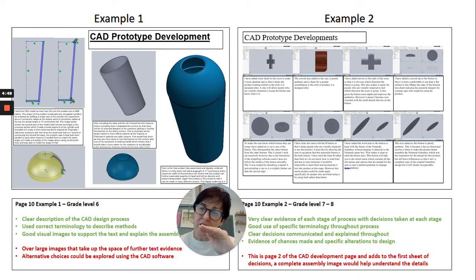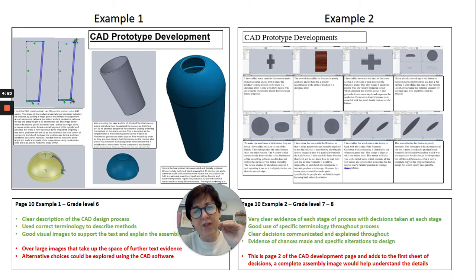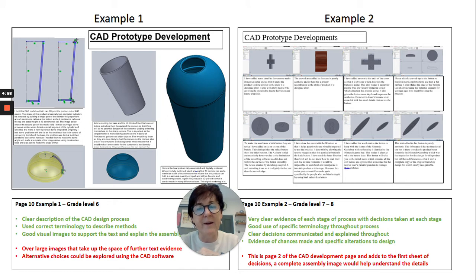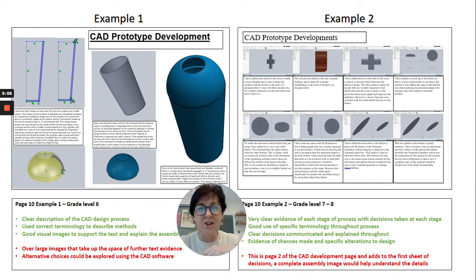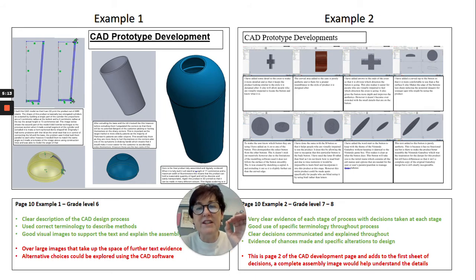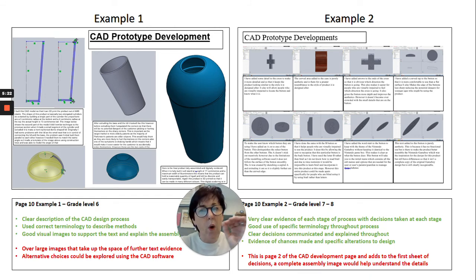It would be good to see this prototype developed further — for example, thinking about a more ergonomic shape on that beaker. He could have used the CAD program to trial that out, experiment with it, and included it on his CAD development page. CAD is a really good way of doing that — you can very quickly and easily change a design, tweak it, and come up with alternative design options. The examiners will really want to see that. Have you really thought about what other options you have? Can you push your design further — where else could this idea go?